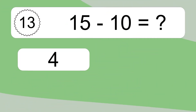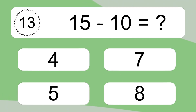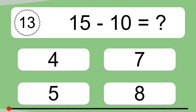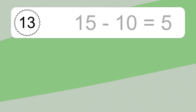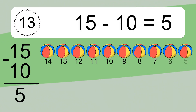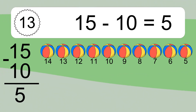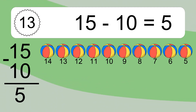15 minus 10 equals what? 15 minus 10 equals 5. Let's count it: 14, 13, 12, 11, 10, 9, 8, 7, 6, 5.